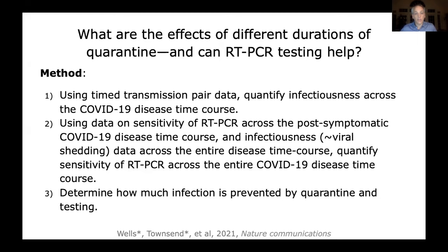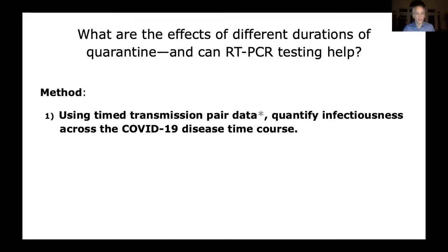The basic question asked to justify shorter quarantine was: what are the effects of different quarantine durations and can RT-PCR testing help? The three-part method used transmission pair data to quantify infectiousness across the COVID-19 disease time course, data on RT-PCR sensitivity and viral shedding across the disease time course, and determined how much infection is prevented by quarantine and testing.